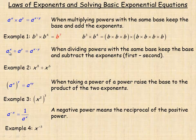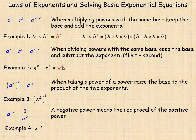The second law says a to the power of x divided by a to the power of y equals a to the power of x minus y. When dividing powers of the same base, you keep the base and subtract the exponents — first exponent minus the second. For example, x to the eighth divided by x to the sixth equals x squared.